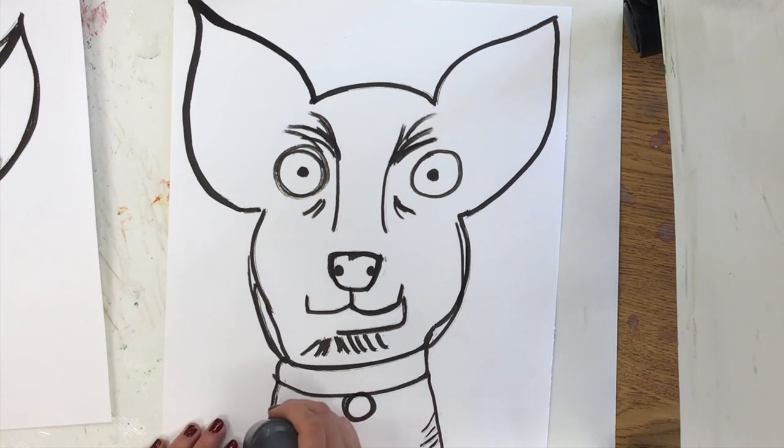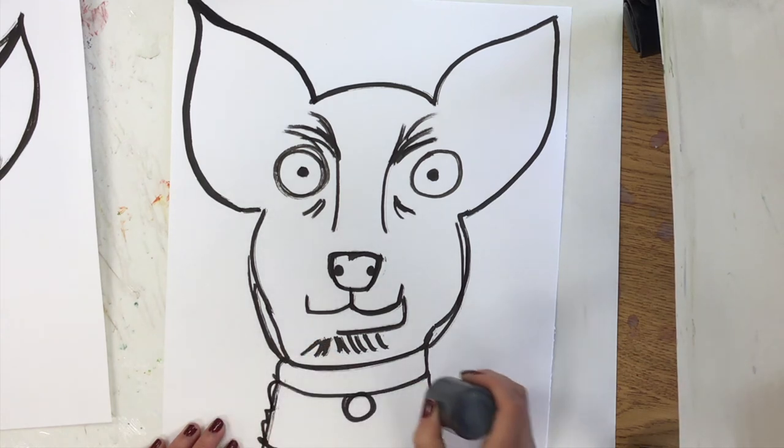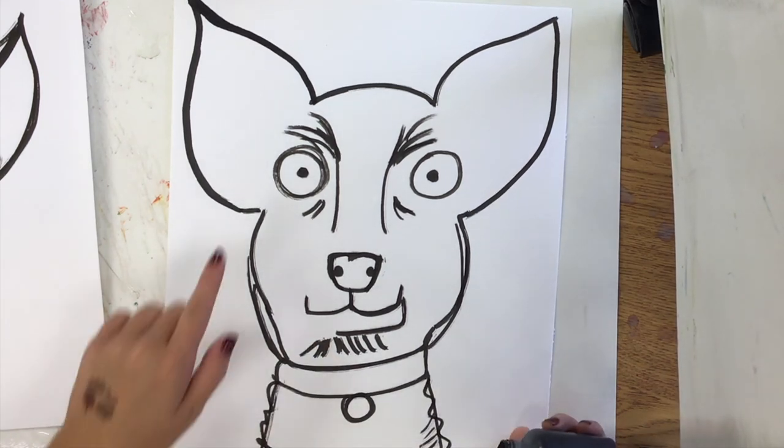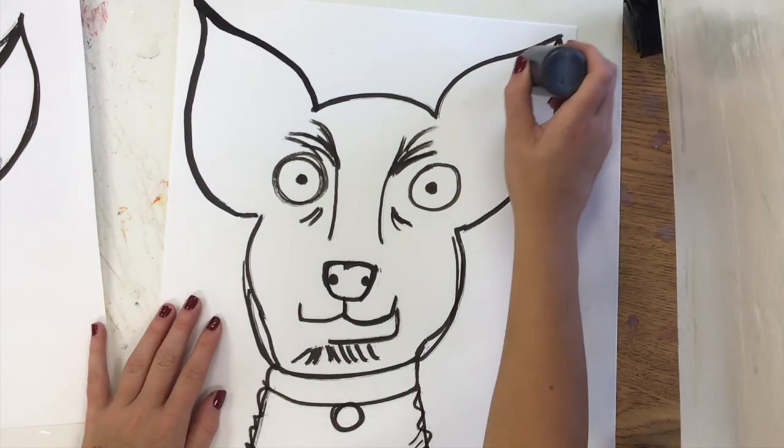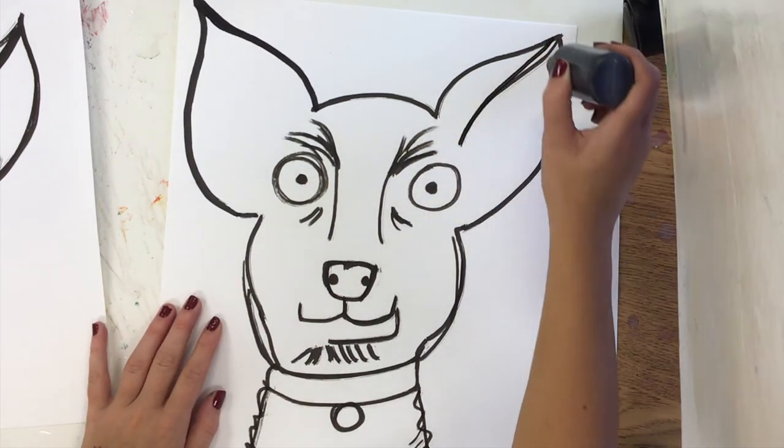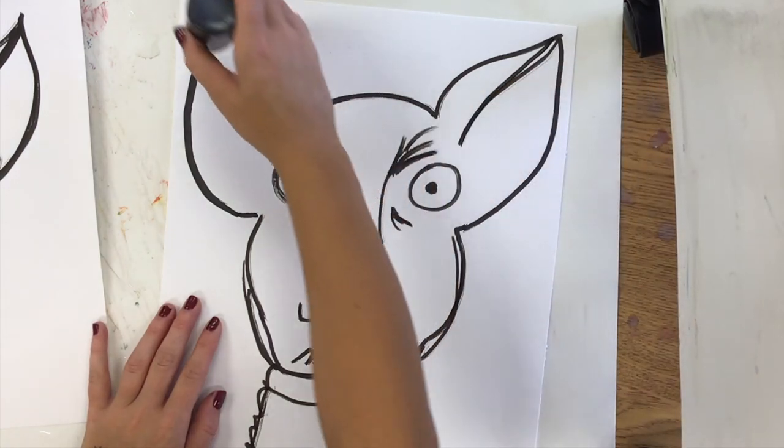And then I might go back and look at some different ways to add a little bit of space with my ears. So drawing that line to show the top of his ear and then maybe a couple more lines on the inside.